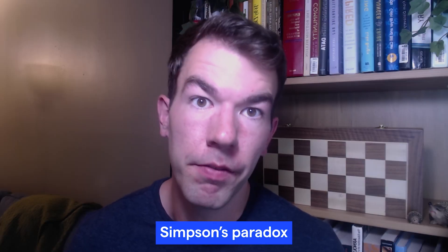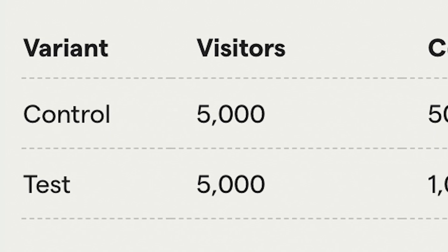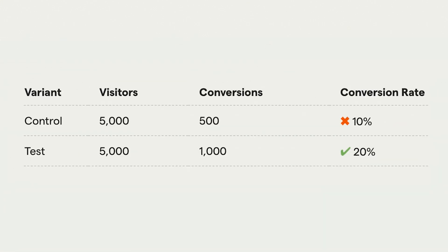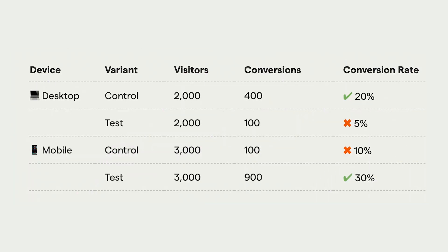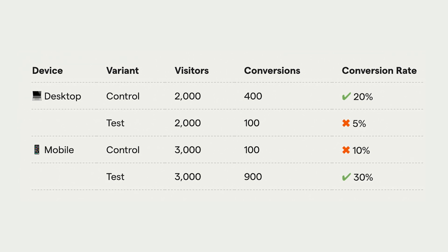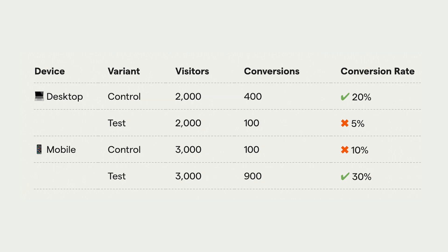Second is only viewing results in aggregate, also known as Simpson's paradox. It is possible for aggregated experiment data to show different results than experiment data broken into subgroups. For example, suppose you are testing your signup flow and get results in favor of your test variant. Breaking down the visitors into desktop and mobile could show that the test worked much better on mobile but worse on desktop — something that is missed without doing this breakdown.